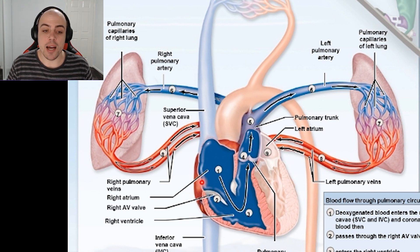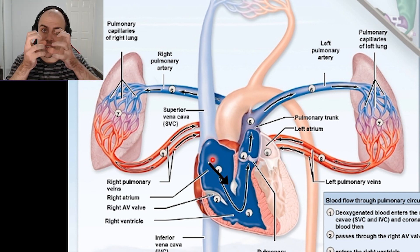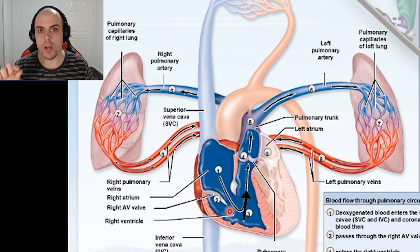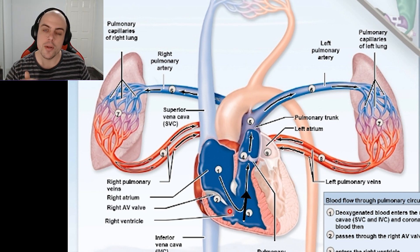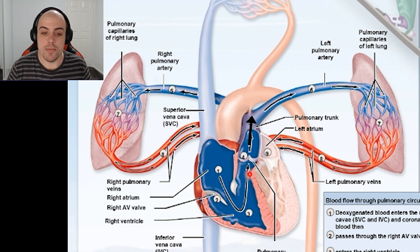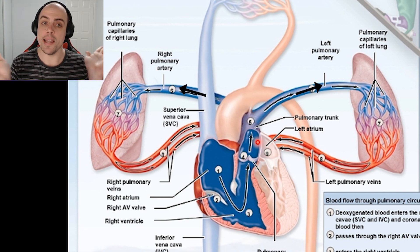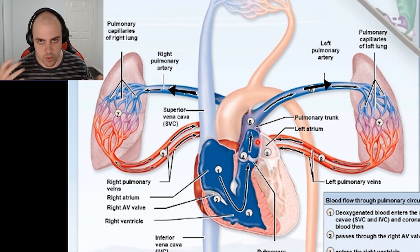How is the blood getting to the right atria? Primarily from the inferior and superior vena cava. From there, the atria will constrict, squeeze and push blood from the atria into the ventricle, passing through the tricuspid valve. The ventricle then constricts and pushes blood from the ventricle up through our pulmonary semilunar valve into the pulmonary trunk. From the pulmonary trunk, that deoxygenated blood splits into the left and right pulmonary arteries, which continue on to the left and right pulmonary arterioles until it reaches the left and right lung.